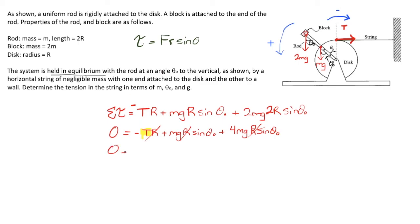But writing down what we do have, we have negative T. 0 equals negative T plus mg sine theta naught plus 4mg sine theta naught. Actually those are like terms so those might as well be 5mg sine theta naught.